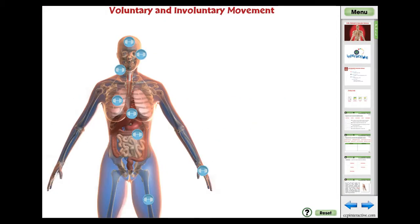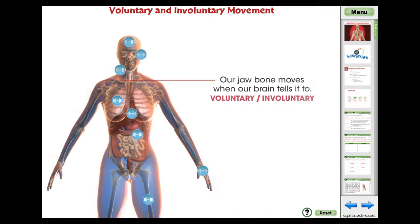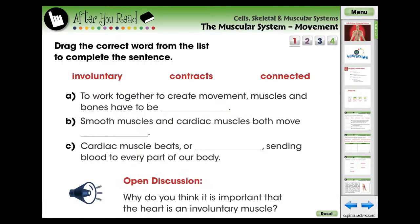A stop cue is provided to ensure students comprehend the content before continuing. The Voluntary and Involuntary Movement activity is an engaging mini to support the comprehension of the content in the reading passage. Students determine whether different types of muscle movement in the human body are examples of voluntary or involuntary movement.